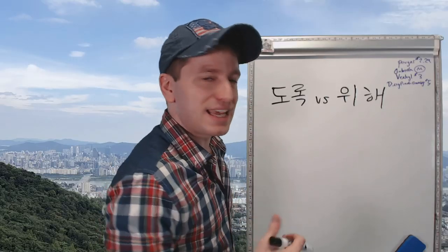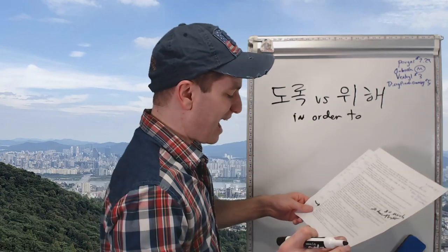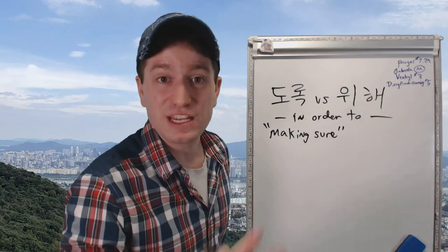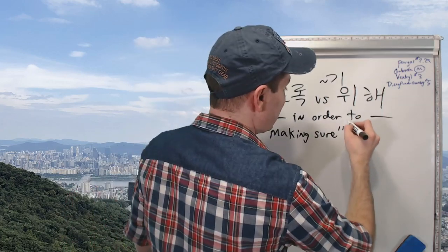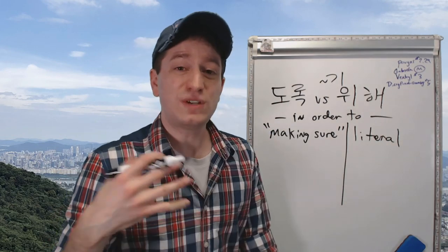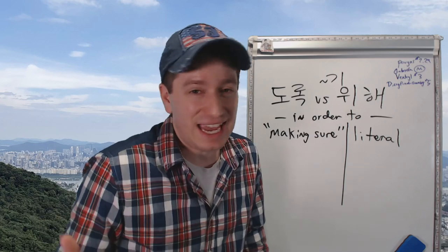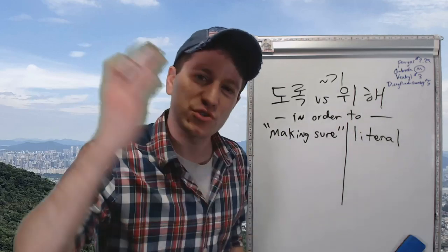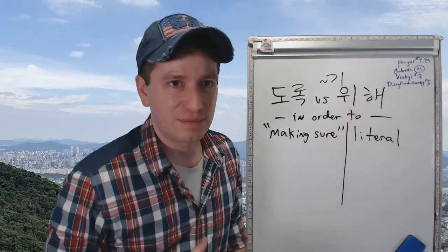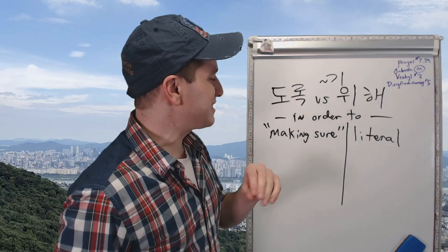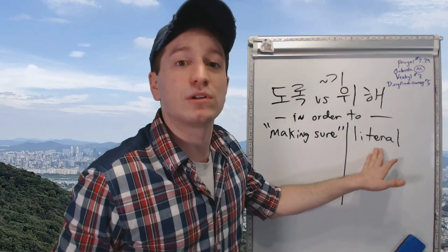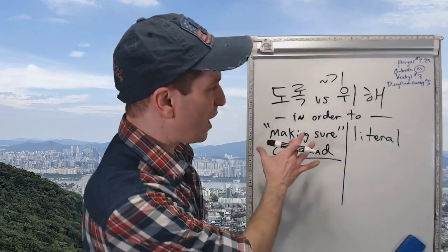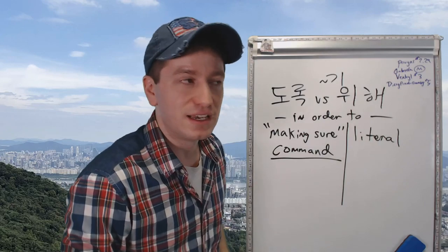도록 and 위해 can both mean 'in order to.' 도록 has more of the meaning of making sure to do something. 하기 위해 is more literal sounding. If you say 할 수 있도록, you're saying 'so that I can' or 'to make sure that I can.' 한국어를 배우기 위해 is a more direct literal translation of 'in order for me to learn Korean,' whereas 배울 수 있도록 is like 'so that I can learn Korean.' 위해 has a much more literal feeling, and the advantage is you can use it anywhere. 도록, however, you can't just throw everywhere — it has to be used to mean 'so that.'